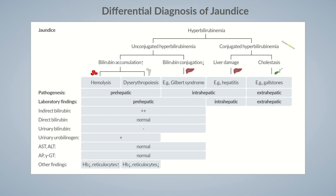Bilirubin conjugation is impaired in Gilbert syndrome, so a lower amount of bilirubin reaches the colon, resulting in less urobilinogen produced and lower levels of urinary urobilinogen. However, this decrease can't be detected using the urine dipstick test because it provides only semi-quantitative measurements. In contrast to hemolysis, urobilinogen levels aren't elevated. Moreover, episodes of mild jaundice can be triggered by fasting or stress.